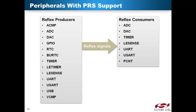To further extend the usability of PRS, most producers can trigger reflex channels on different events. One example of this is the USART, which can generate a reflex signal on one channel when a byte is transmitted and a PRS signal on another channel when a byte is received. Consumers can also perform different tasks when triggered by a reflex signal. For example, one reflex channel can trigger a single channel ADC conversion and another reflex channel can trigger a scan mode conversion. The timer was also used as an example of a peripheral that can do different tasks on the positive and the negative edge of a reflex signal.